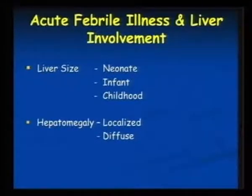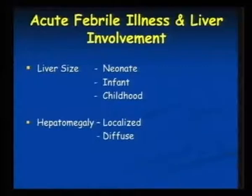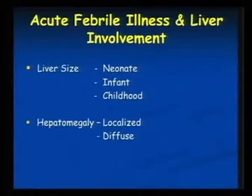In neonates, you can have a liver span of almost 4.5 centimeters with a smooth, leafy margin — not a firm margin. The right lobe can extend down into the right iliac fossa; it's a tongue-like projection from the liver — that much of a Riedel's lobe we can palpate down to the right iliac fossa. The span increases with age, reaching 8.5 cm in females and 9.5 cm in males by 12 years — smooth, soft, and leafy margin, but soft. If it is firm, then there is underlying liver disease.